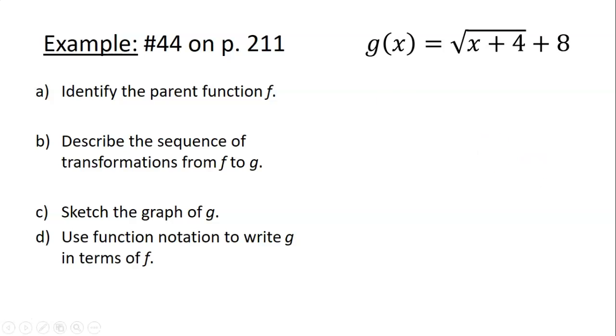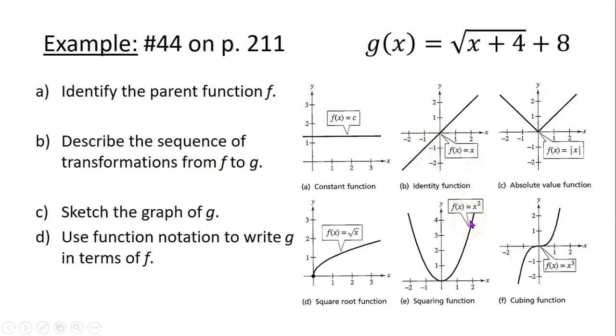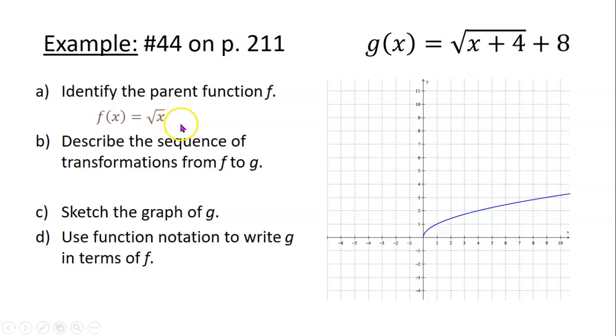And last example. You'll be doing one or two like this on the homework. The directions might be a little confusing if you're not sure what they're talking about, so let's work through this to see how this works. So they give you a function. In this example, the function they give us is g(x) equals the square root of (x + 4) plus 8. And they ask us to do four things. First thing they ask us to do is to identify the parent function. So that means out of those basic parent functions that we looked at in the last section, which one is this a variation on? Which one can we take as our starting point and then do something to it to get this? Answer: that would be the square root function. f(x) equals the square root of x. So that's the parent function.